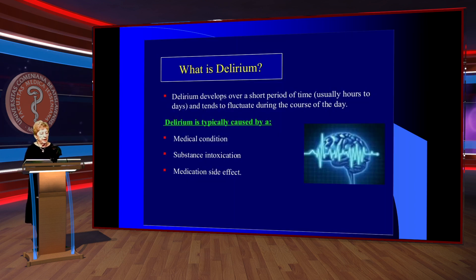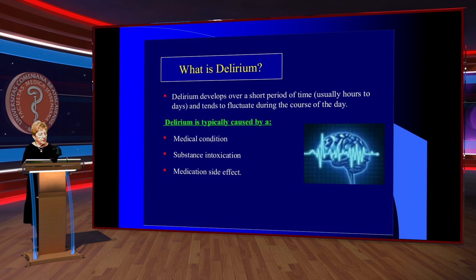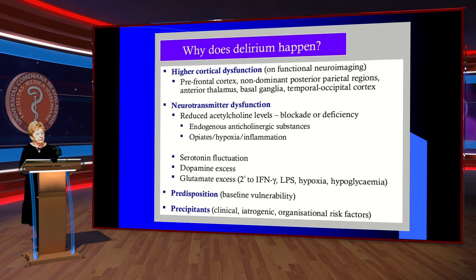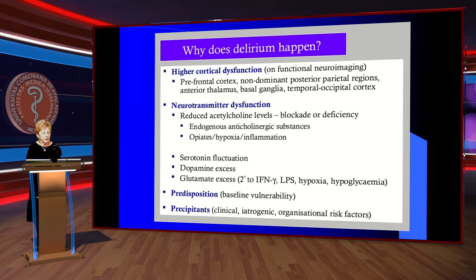Delirium is typically caused by a medical condition, substance intoxication, alcohol, or medication side effects. Why does delirium happen? Higher cortical dysfunction, neurotransmitter dysfunction — for example, reduced acetylcholine levels — opiates, hypoxia, inflammation, serotonin fluctuation, dopamine excess, and glutamine excess, among other causes.